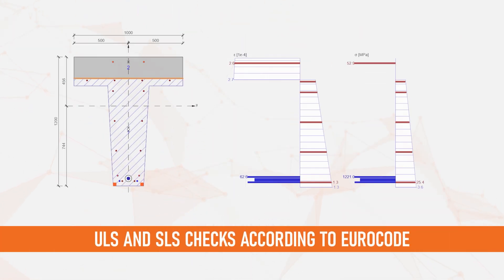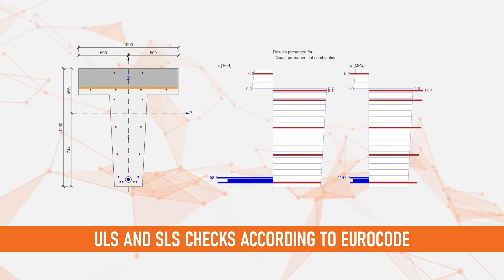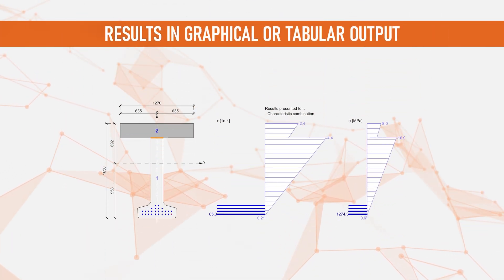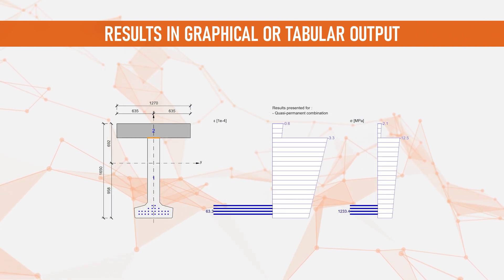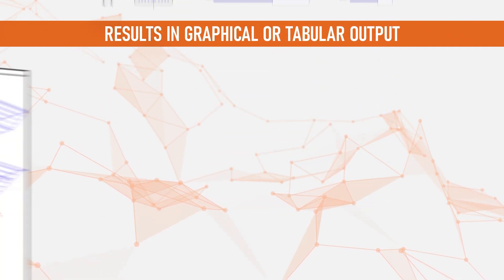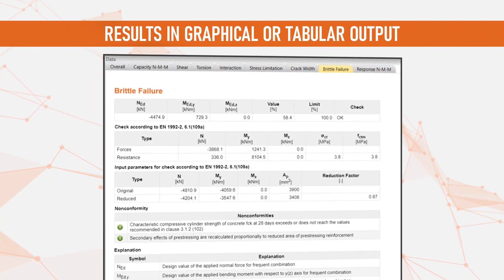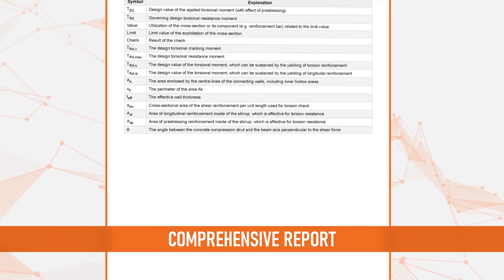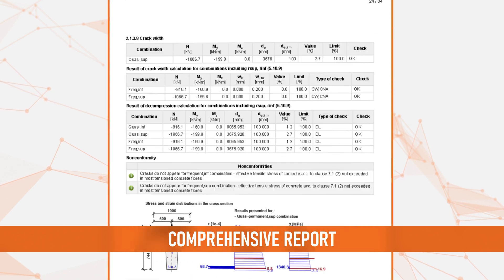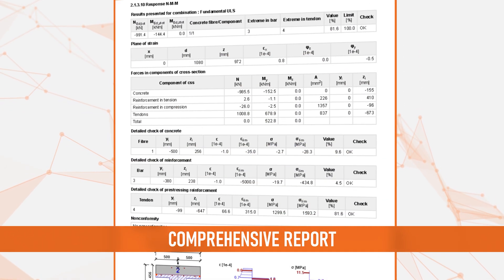Get comprehensive results, including interaction, stress limitation, and cracks. The results are clearly displayed according to your preferences in graphical or tabular format. The display options will help you understand both cross-section utilization and behavior. Share your outcomes as a fully customizable report and export it for further editing. Plus, you can save yourself additional time by exporting the reinforcement as a DXF.